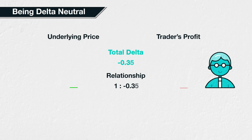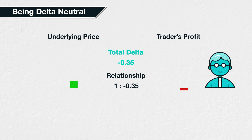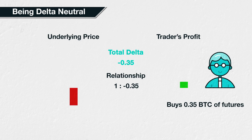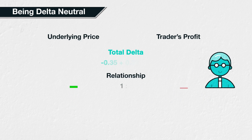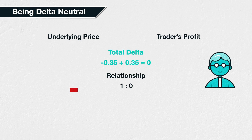For example, let's assume a trader sells the Bitcoin call option mentioned above, and therefore has a delta of minus 0.35. To reduce their overall delta to zero, they need to gain a positive 0.35 delta from somewhere else. To achieve this, the trader buys Bitcoin futures contracts with a position size of 0.35 Bitcoin. If the price of Bitcoin subsequently increases by one dollar, the call option will have increased in value by 0.35, resulting in a loss for this trader as they are the seller of the call option. However, their futures position will have made a profit of 0.35, cancelling out the loss made by selling the call.